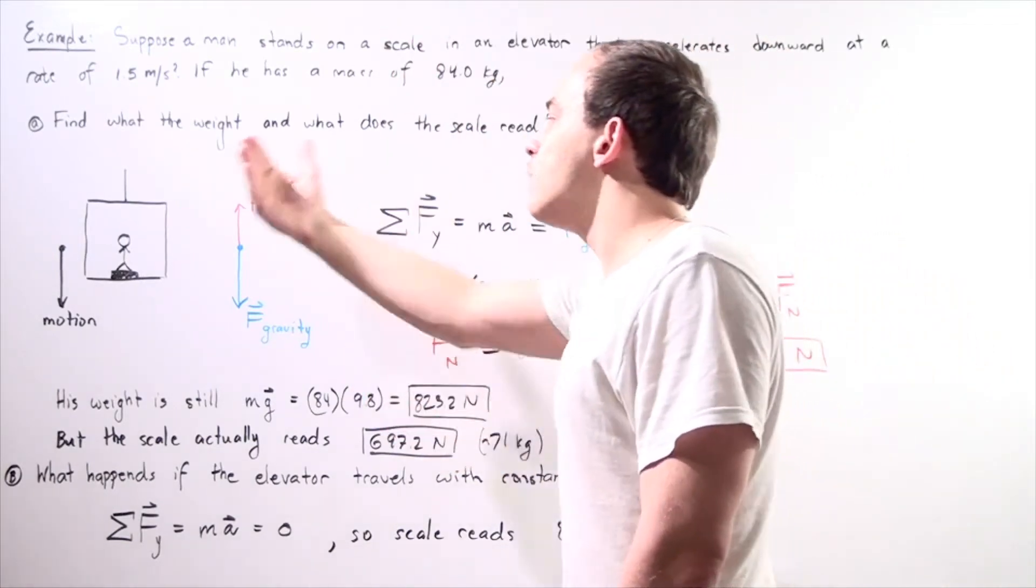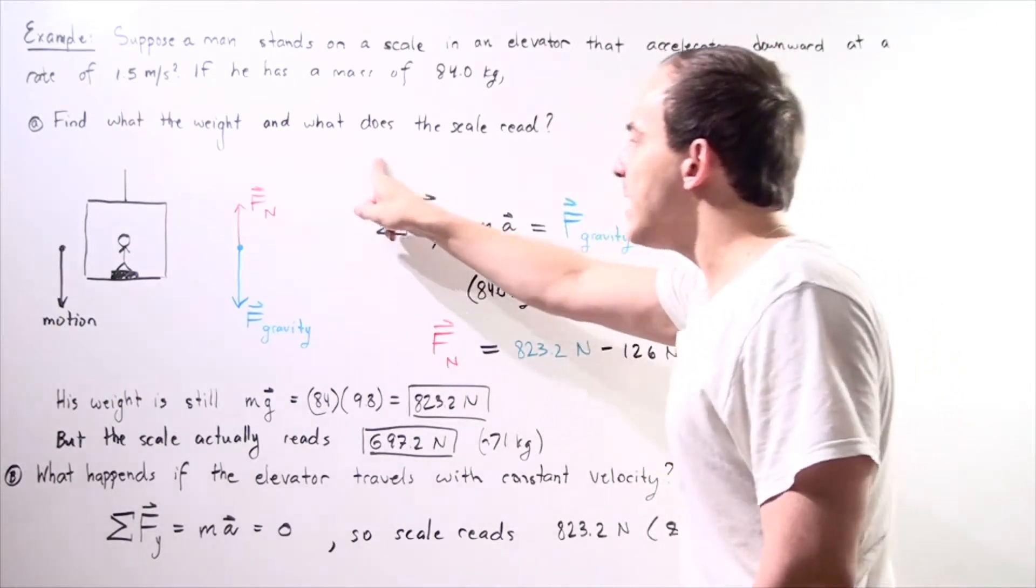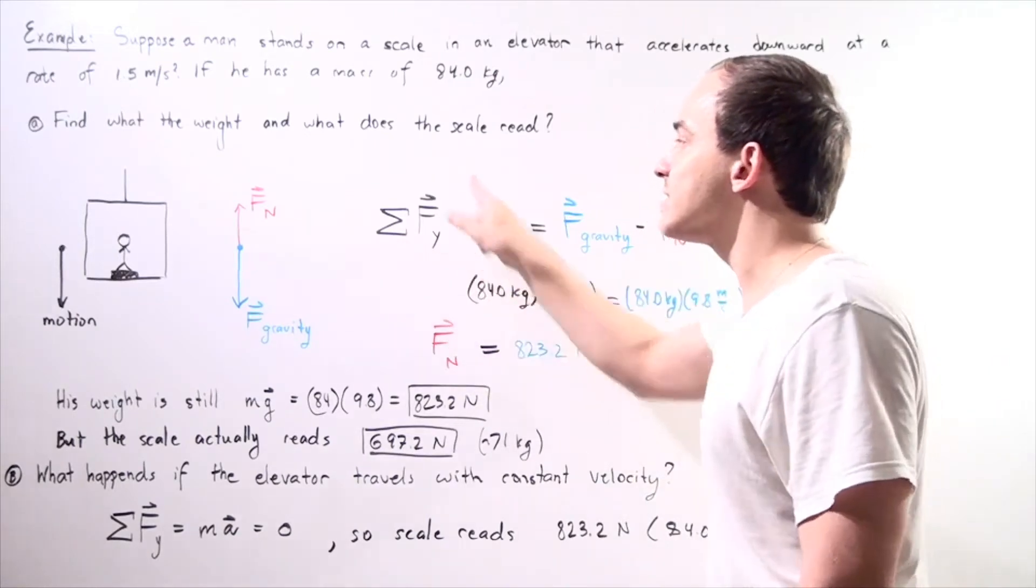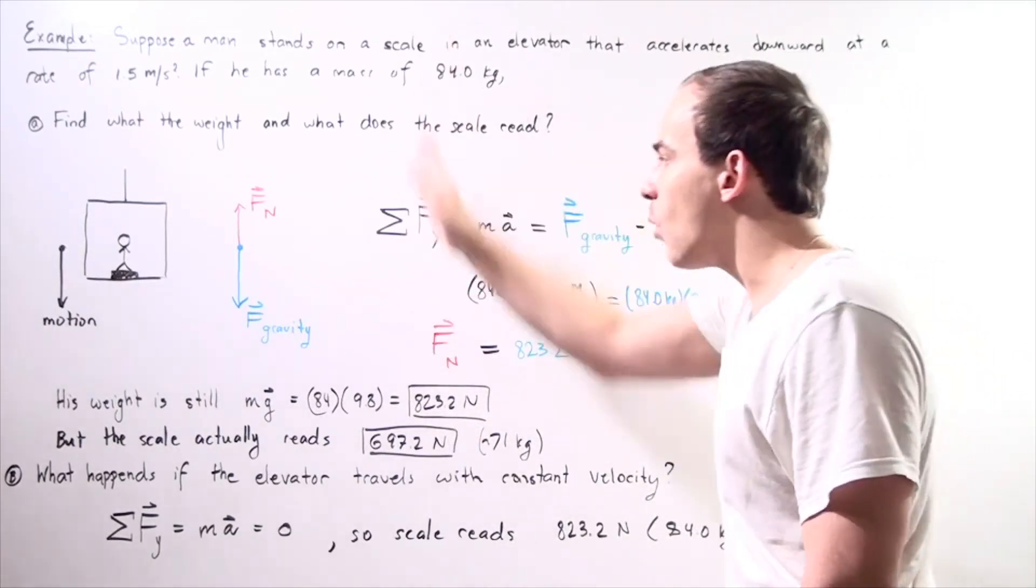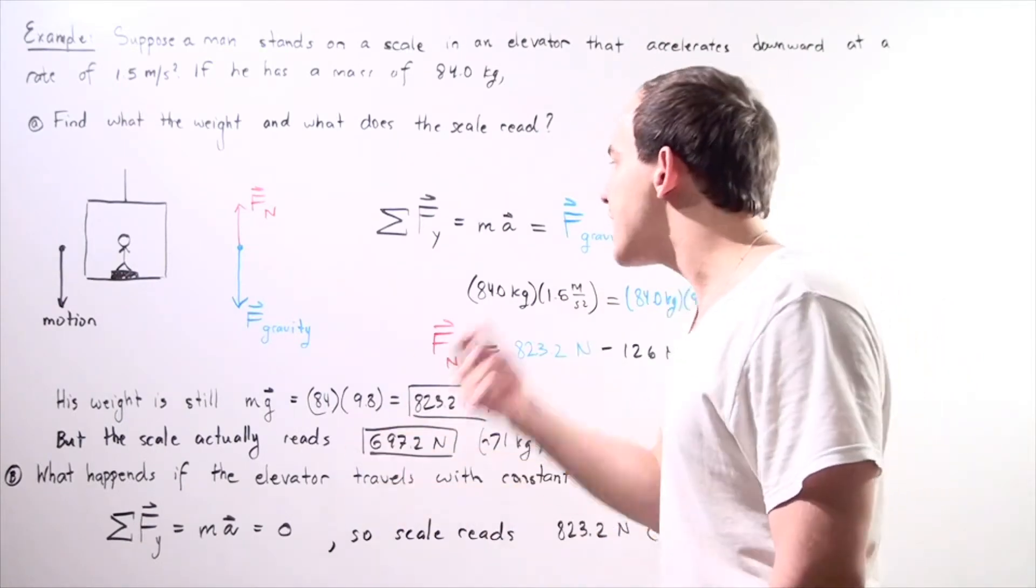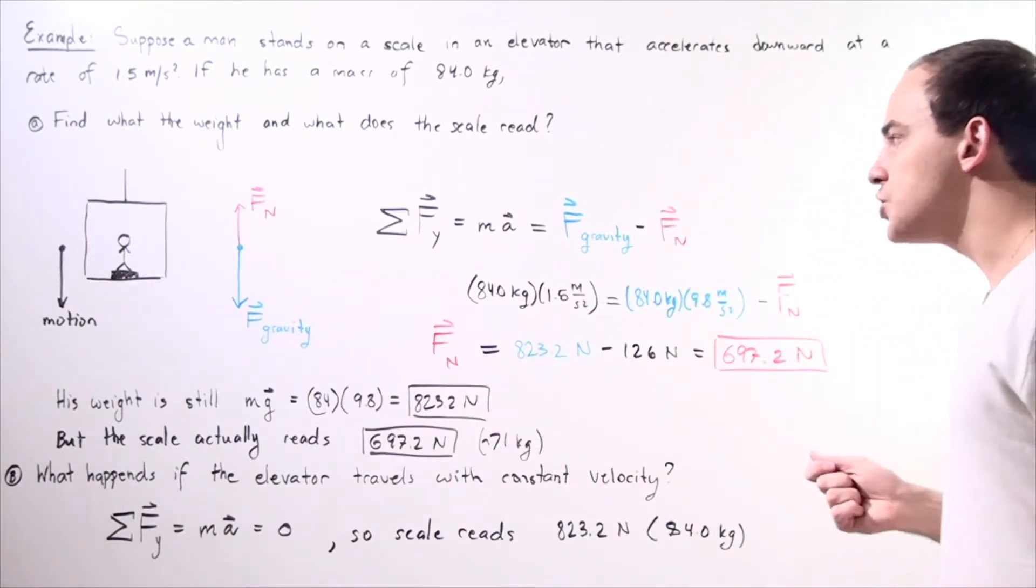Because we have motion, that means we have a net force acting along the y-axis. The net force, the sum of the forces along the y-axis, is equal to mass times acceleration according to the second law of motion.